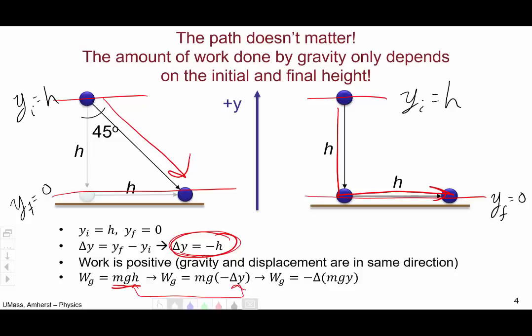Now, m and g are constants, so we can pull them inside the delta, and the negative sign comes outside, giving us the work done by the force of gravity is minus delta mgy.